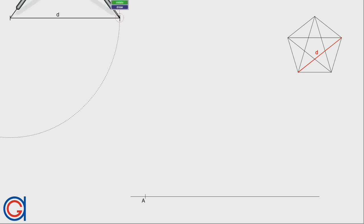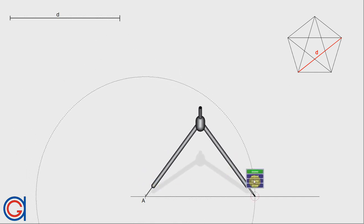So now, setting your compass to the length of the given line segment d, we are going to transport this onto the horizontal line from point A, getting a second point P.